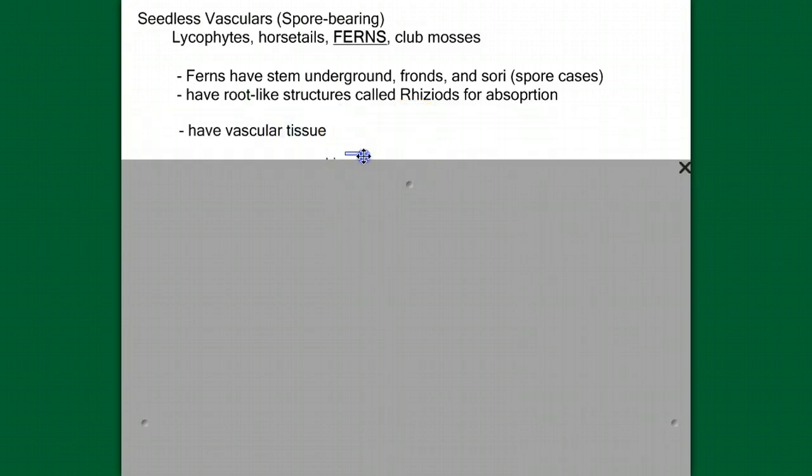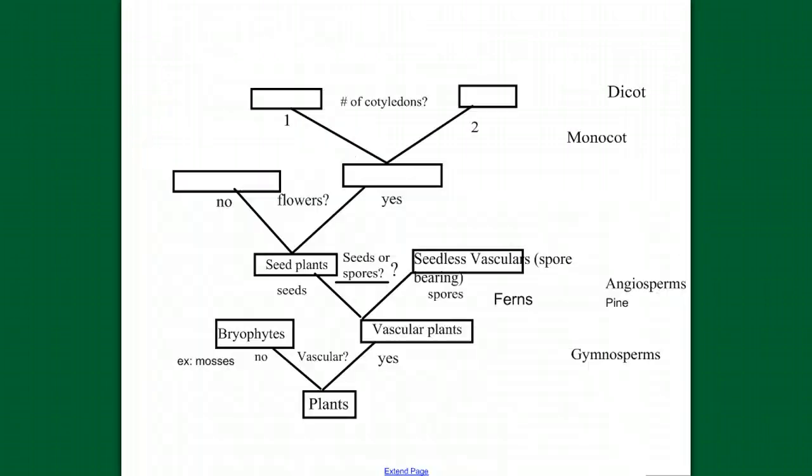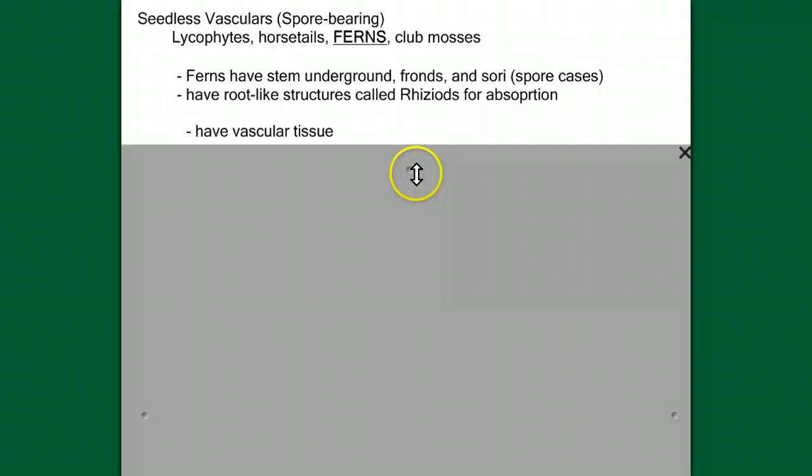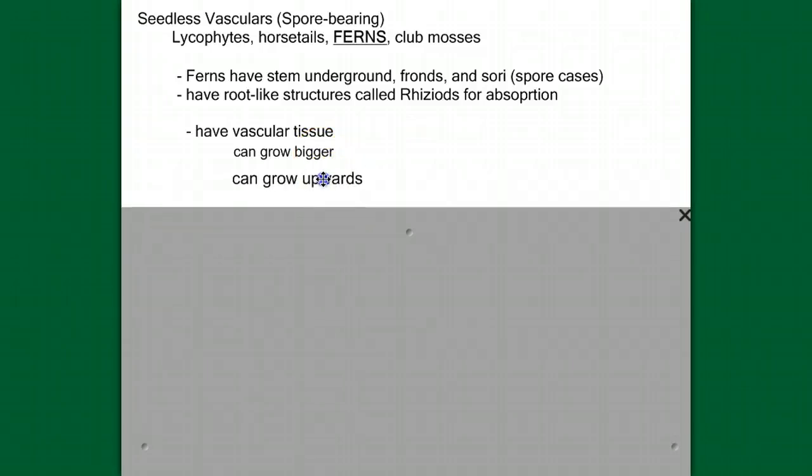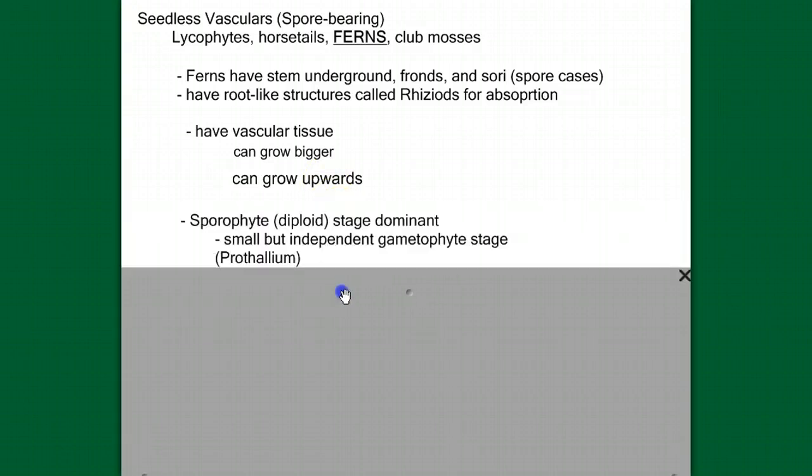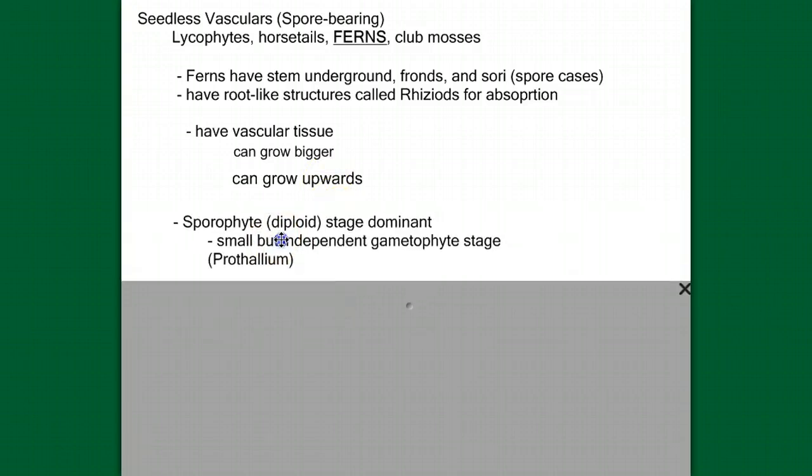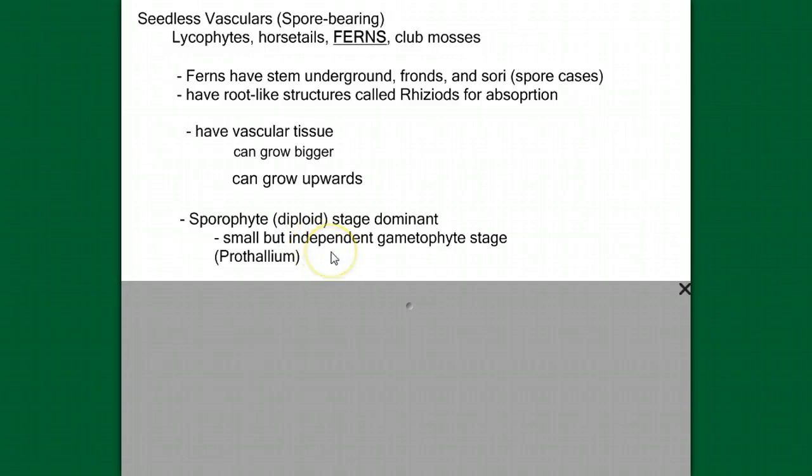That's kind of the big new thing we have as we move from mosses to ferns. If you recall, that's kind of the basis of this division. We have vascular tissue now, which means they can grow bigger because that vascular tissue allows them to move materials efficiently throughout a larger body. They can grow upwards because we have structural support.